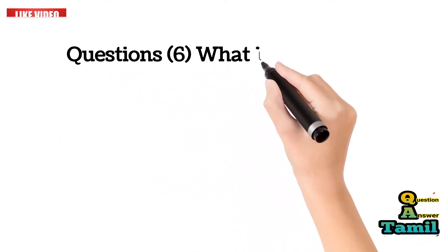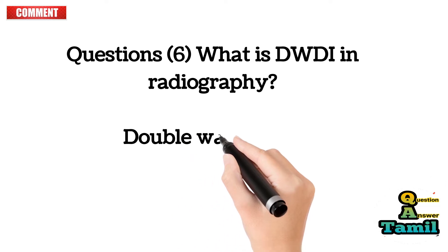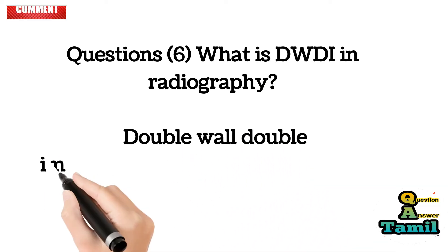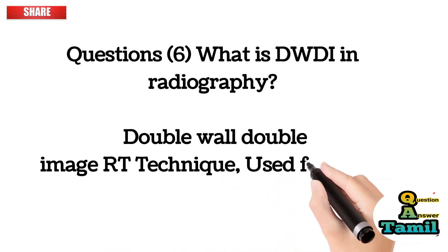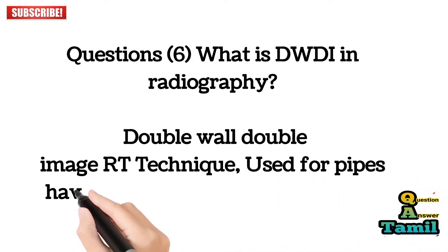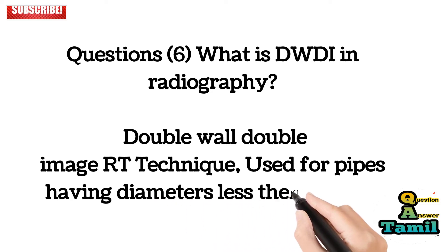Question 6: What is DWDI in radiography? DWDI stands for Double Wall Double Image RT technique, used for pipes having diameters less than 89 millimeters.